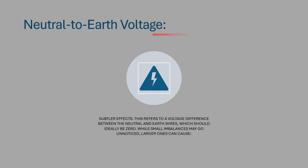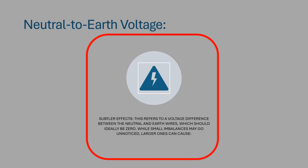Neutral-to-Earth Voltage Subtler Effects. This refers to a voltage difference between the neutral and earth wires, which should ideally be zero.